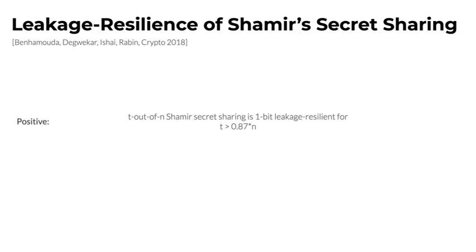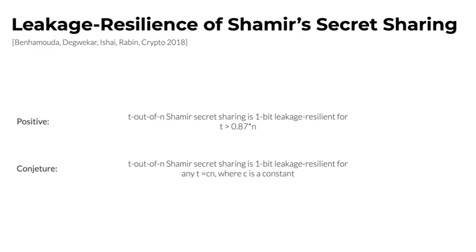So if the reconstruction threshold requires 90% of the shares, then Shamir secret sharing is secure against an adversary who obtains one bit of leakage from every single share. Based on this positive result, the authors conjectured that more generally t-out-of-n Shamir secret sharing is always one-bit leakage resilient if the reconstruction threshold is some constant fraction of the total number of shares.